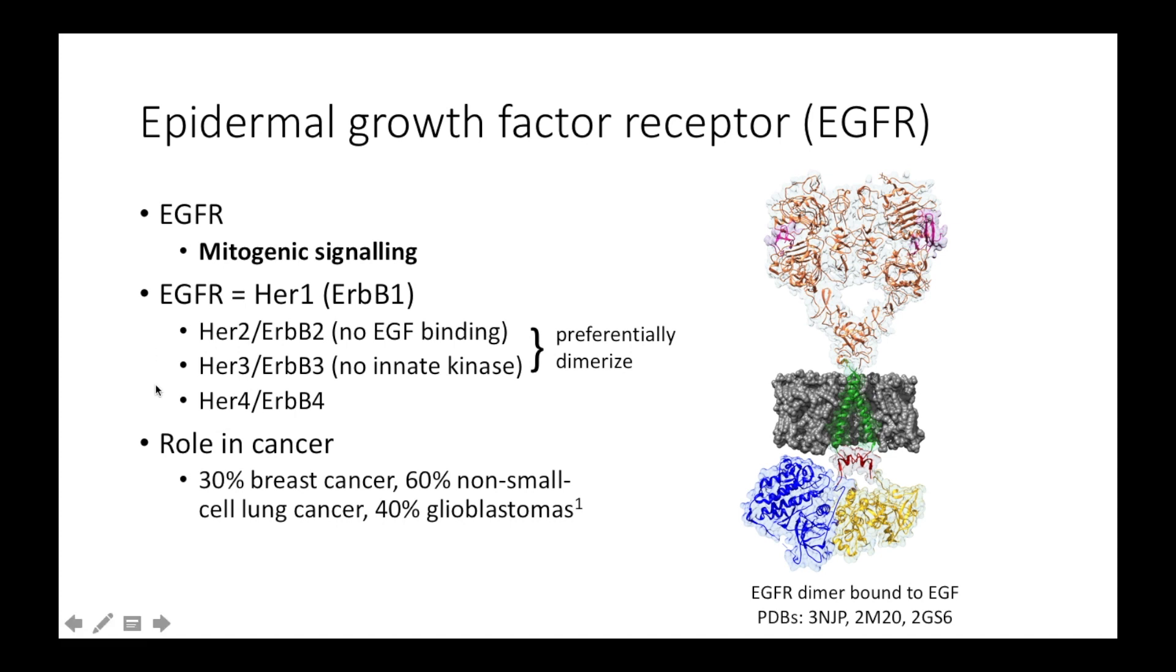Although structurally related, the other family members have altered functionality. Notably, HER2 has no ability to bind epidermal growth factor, and HER3 cannot act as a kinase. However, by working together, these proteins can successfully carry out the hormone binding and phosphorylation activities necessary for a functioning cell surface receptor.